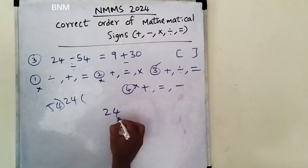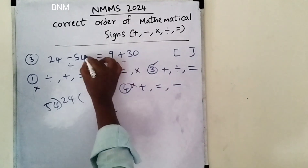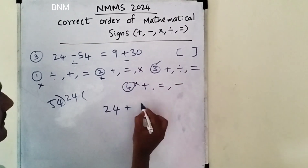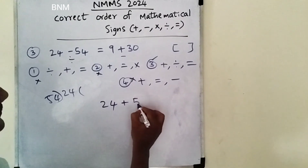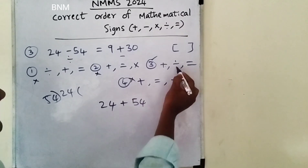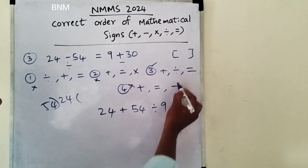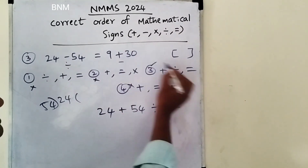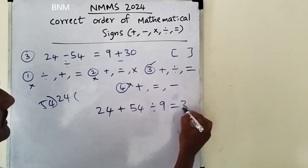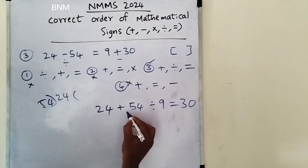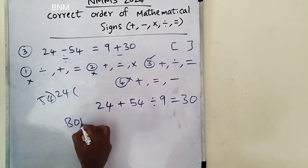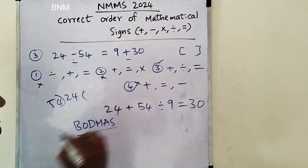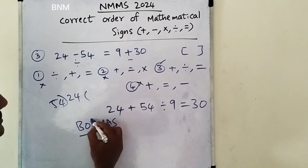First one — this is divisible. First two plus. Plus 54, division 9, equal to. Last two equal to. First two Board Master. First two Board Master. First two division 9.